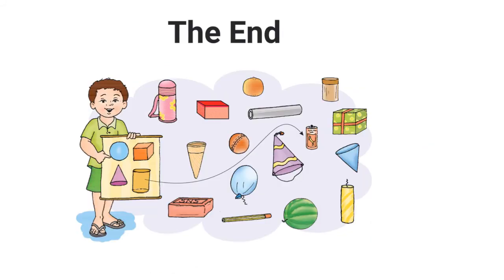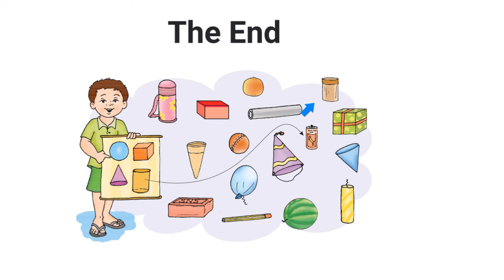Now we have come to the end of this lesson. In this lesson you learnt about circles, squares, cones, and cylinders. You also learnt to sort out different objects based on what shape they are.